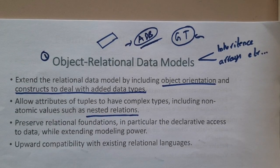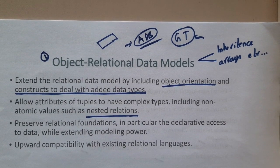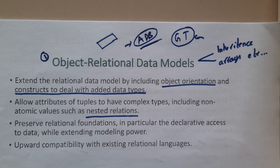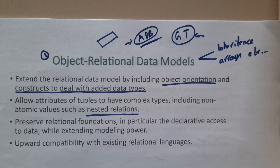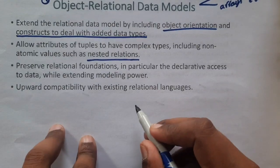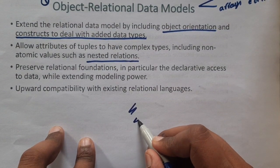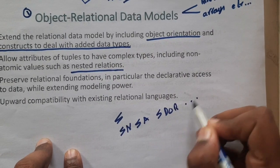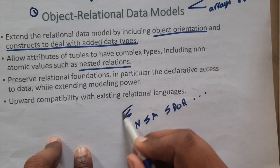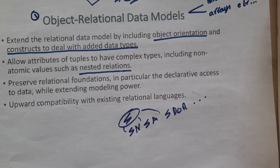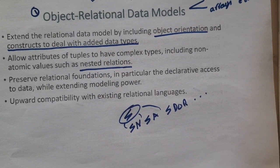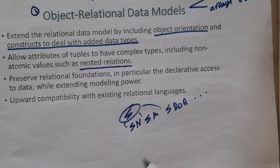Let us first understand what is the object-relational data model. We already know what a relational data model is — any database storing data in the form of rows and columns with relations between them. For example, a student table has student name, student age, student date of birth, etc., all related to the student. The table name is the entity and everything else are attributes — this is the normal representation of relational databases.